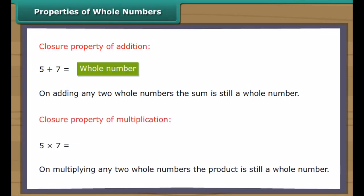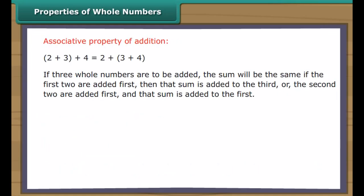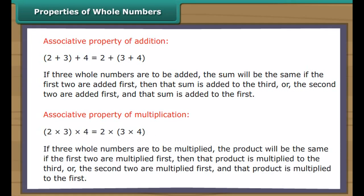Properties of whole numbers. On adding any two whole numbers, the sum is still a whole number. On multiplying any two whole numbers, the product is still a whole number. If three whole numbers are to be added, the sum will be the same if the first two are added first then the sum is added to the third, or the second two are added first and that sum is added to the first. If three whole numbers are to be multiplied, the product will be the same if the first two are multiplied first then the product is multiplied to the third, or the second two are multiplied first and that product is multiplied to the first.